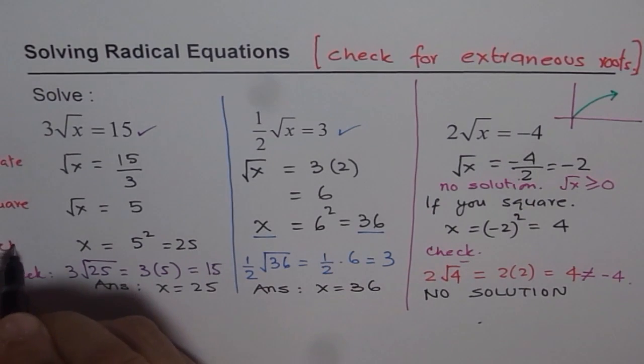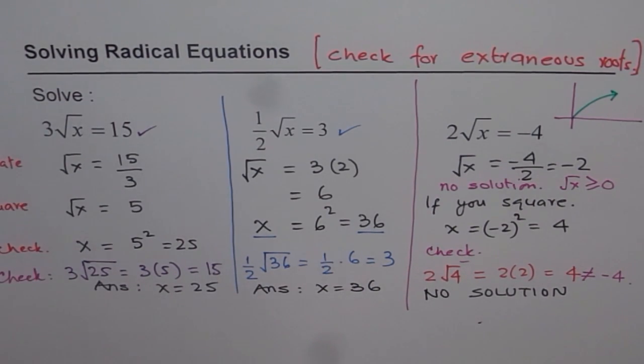And third process is indeed check for extraneous roots. So these are the three steps which you should be following all the time for solving radical equations. I hope this concept is absolutely clear to you. Thank you.